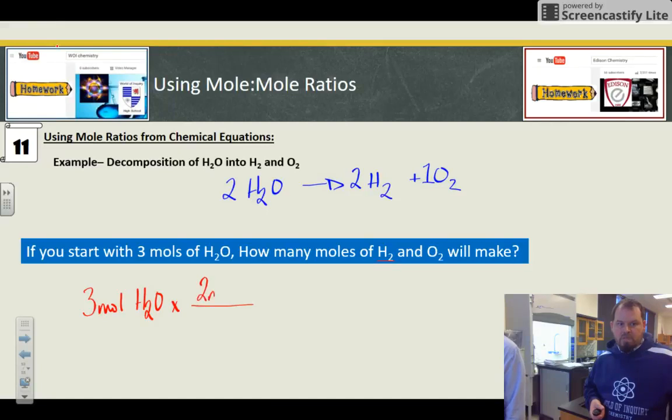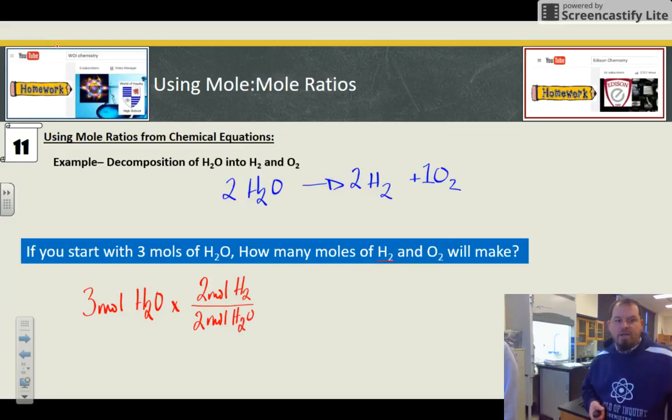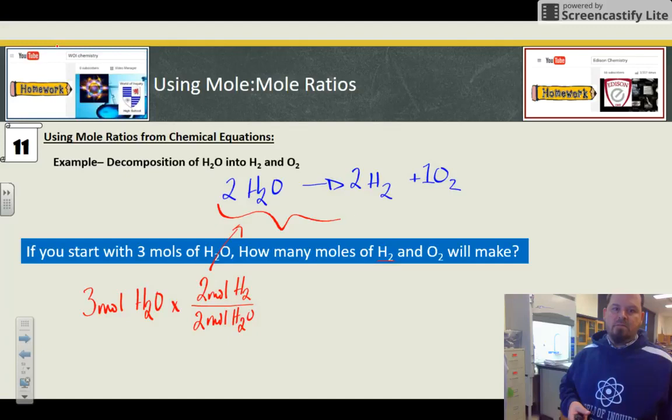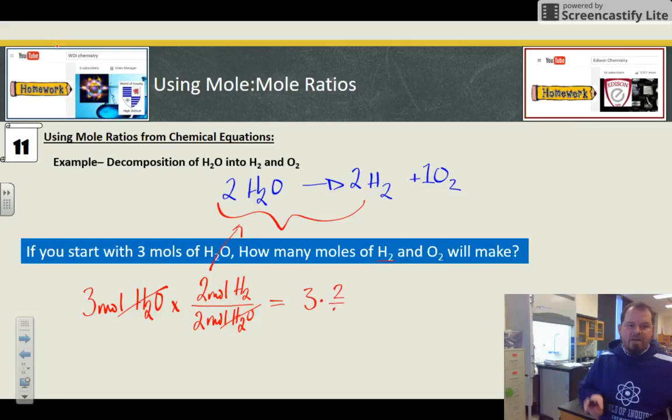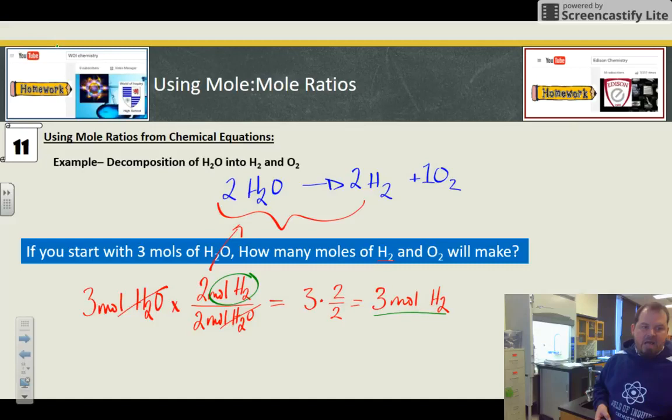Hold on a second. Two mole H2 over two mole H2O. I do that specifically. I want these from the moles of the H2 here. I want these from those two. Yes. So now moles cancels. I have three times two divided by two equals three. So in that case, I can make three moles of H2. Notice H2, moles of H2 is the only unit I have left. I've crossed the other ones out.